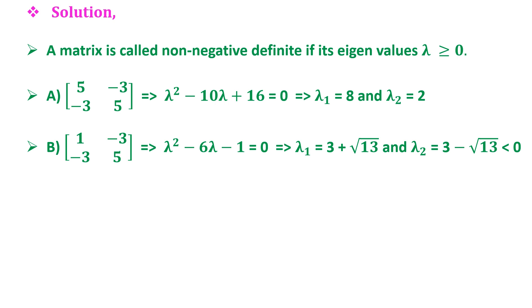For option B, the equation is λ² - 6λ - 1 = 0, which gives us the two factors: λ₁ = 3 + √13 and λ₂ = 3 - √13, which is less than 0.